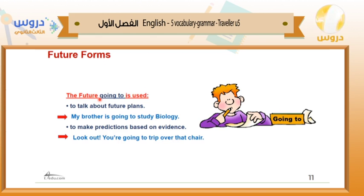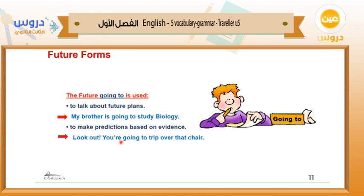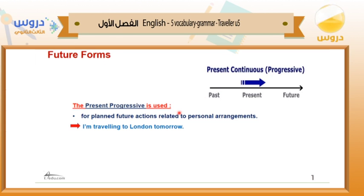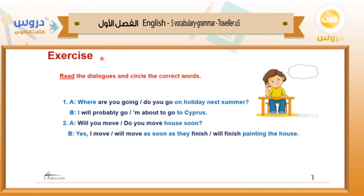We also use future 'going to' to talk about future plans — for example, 'My brother is going to study biology' — and to make predictions based on evidence: 'Look out, you are going to trip over that chair.' The present progressive is used for planned future actions related to personal arrangements, for example: 'I am traveling to London tomorrow.' This chart explains these tenses.